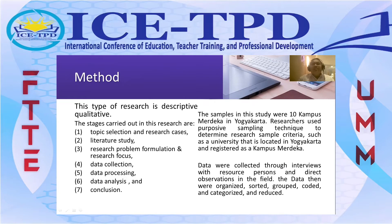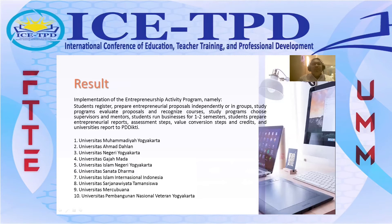Researchers used purposive sampling technique to determine the research sample, with criteria such as a university located in Yogyakarta and registered as a Campus Merdeka. Data were collected through interviews with resource persons and direct observation in the field. The data were then organized, grouped, coded, categorized, and reduced.